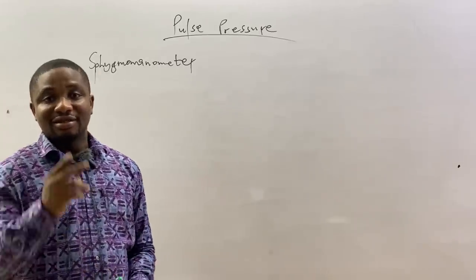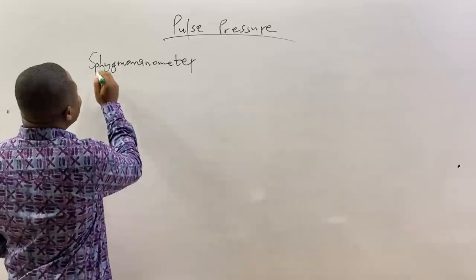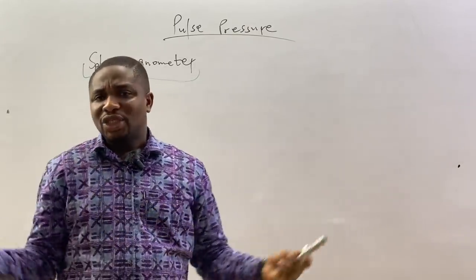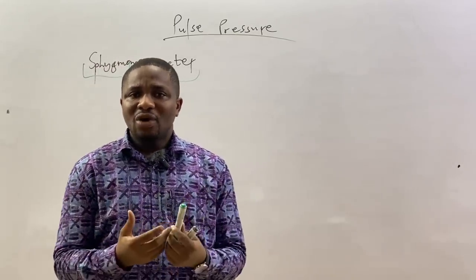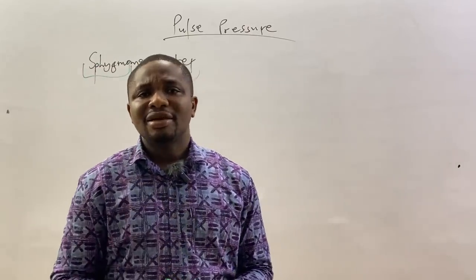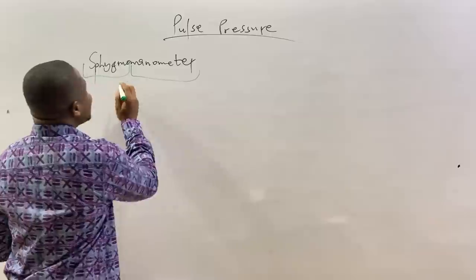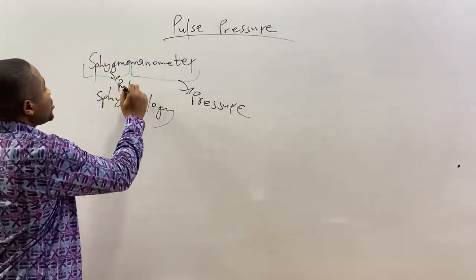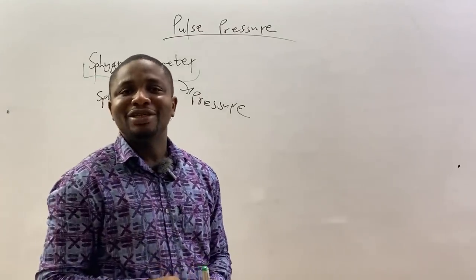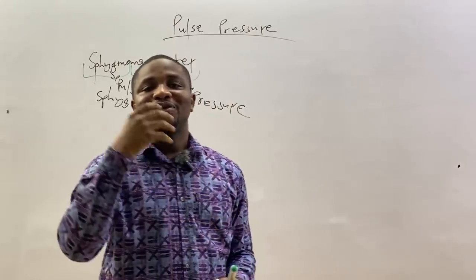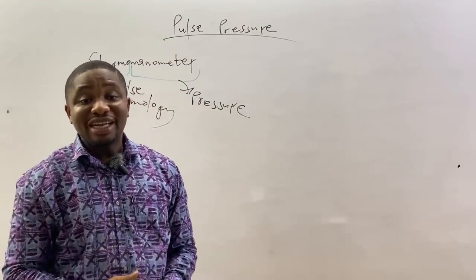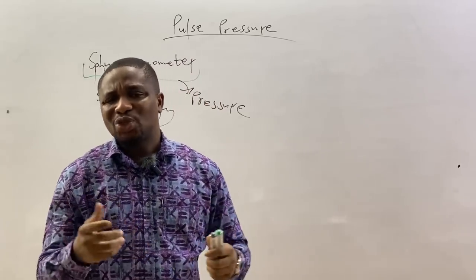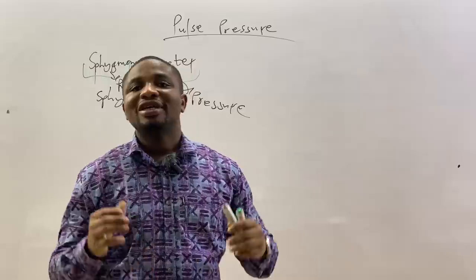This word is made up of two parts: sphygmo and manometer. If we look at sphygmo, in the sciences, the study of pulse is called sphygmology. So sphygmo automatically refers to pulse. The sphygmomanometer's main use is to help you obtain the pulse pressure — meaning the values you obtain from it allow you to calculate the pulse pressure.